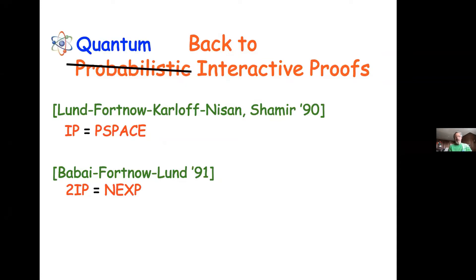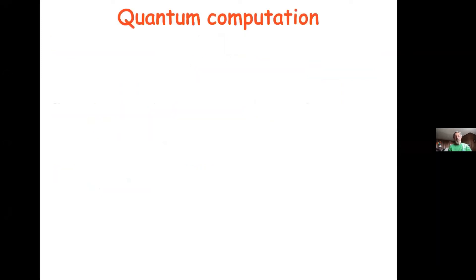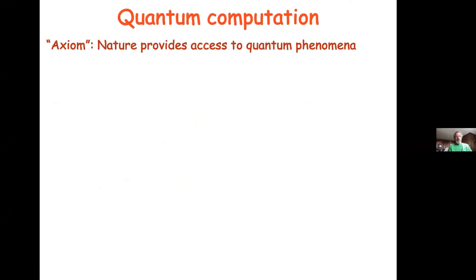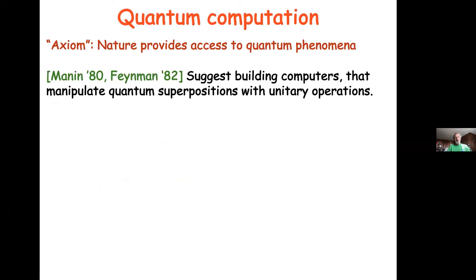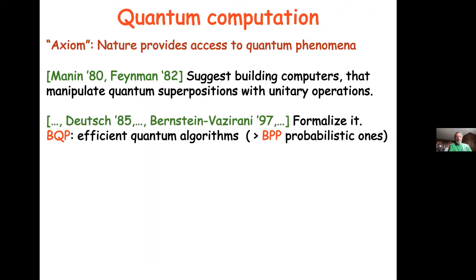The last part of the talk moves from probabilistic proofs to quantum proofs and proof systems. The same motivation applies: quantum mechanics seems to work and we seem to have quantum phenomena available, so why not use it in algorithms? Let's build computers that manipulate quantum superpositions with unitary operations. Just like P, NP, and BPP, we now have BQP — the class of problems solvable by efficient quantum algorithms.